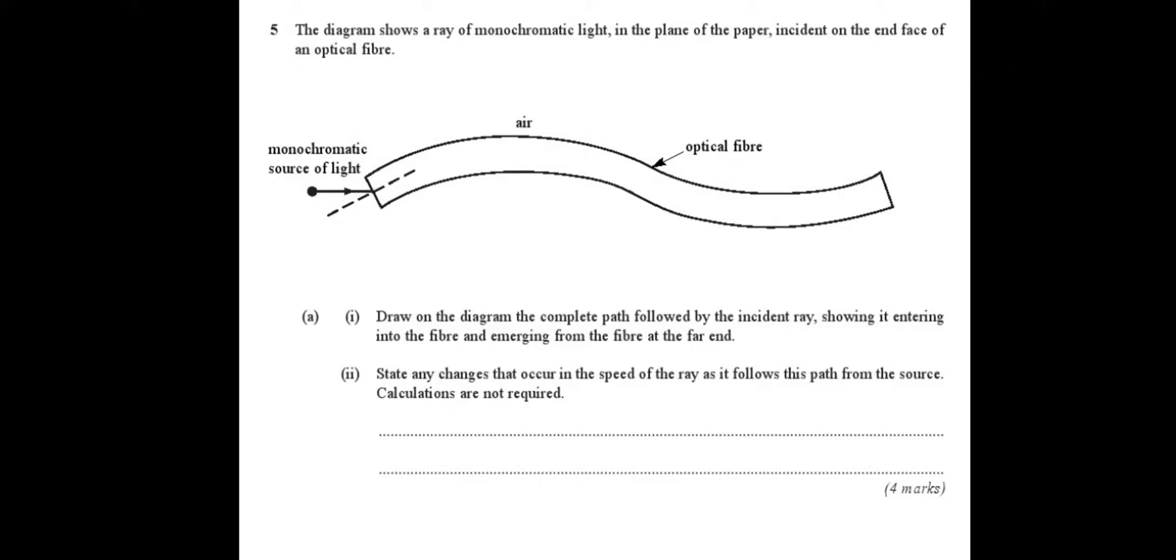So that should look something maybe like this. Then I would draw a normal at 90 degrees. Then it would undergo total internal reflection. So perhaps it would look like this. Draw some directional arrows on there. Put on a normal.